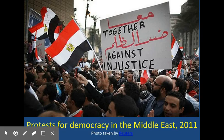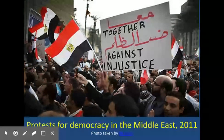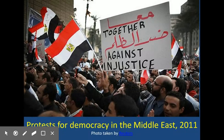The same thing happened in Syria — people took to the streets and demanded democracy. Here is Syria; its capital is Damascus. As you can see, it's surrounded by Iraq, Jordan, Saudi Arabia, Israel, and Turkey.